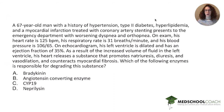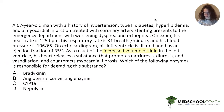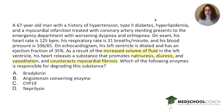We need to know which substance is secreted by the heart in response to increased fluid or increased volume in the ventricle. That substance promotes natriuresis, diuresis, and vasodilation and counteracts myocardial fibrosis. We need to identify the substance that the heart secretes that does that, and then we need to know what degrades that substance.